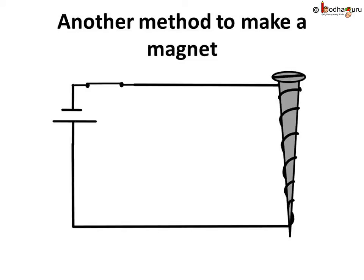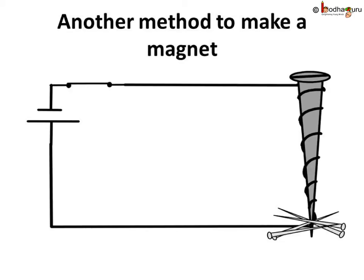Unbelievable? Is it possible? Let us test it. If we bring pins near the iron nail, we will see that the pins cling to the tip of the nail. This proves that the coil has become a magnet.